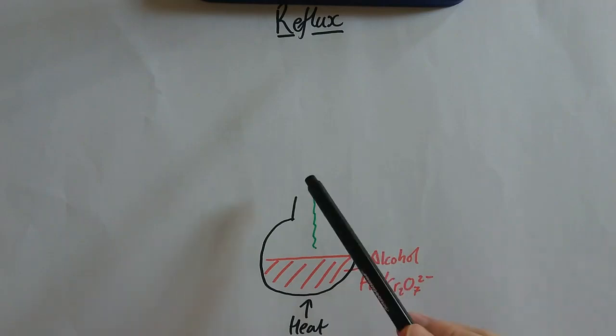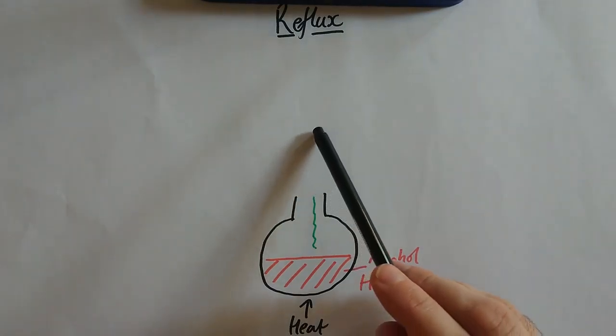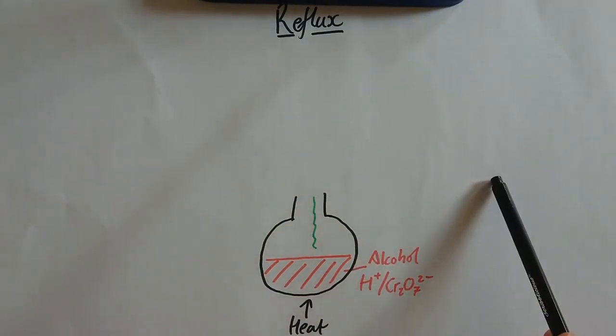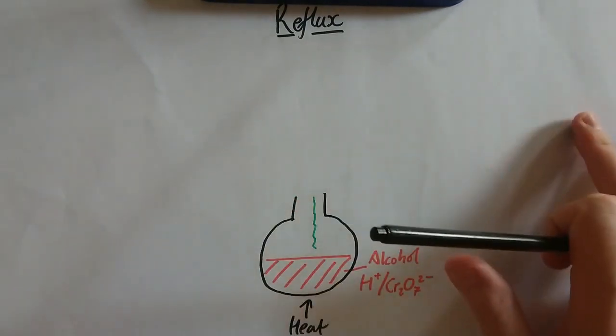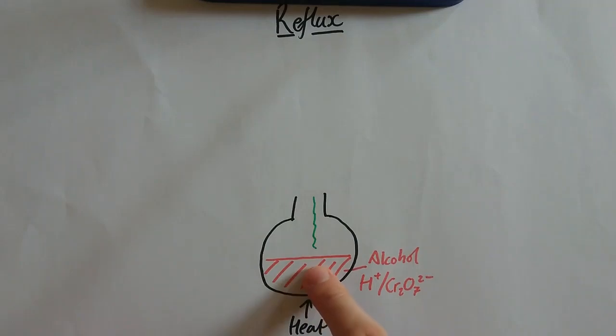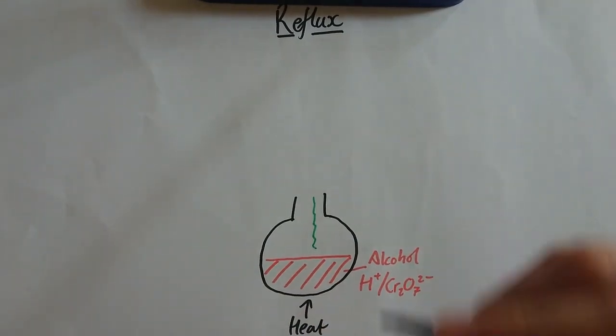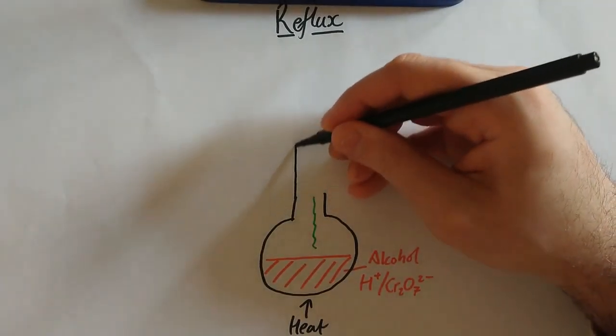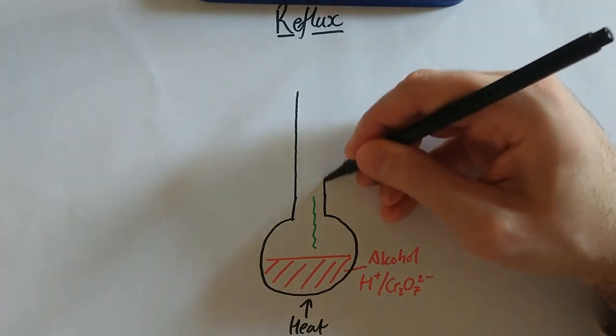Now, when we did distillation, it went up through a tube here and then down through the condenser, off to the side. We don't want it to go off to the side. We want it to get back into this round-bottom flask. So this time, the condenser just goes straight up.